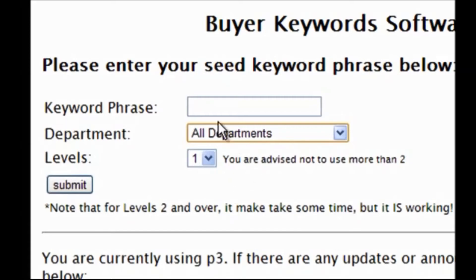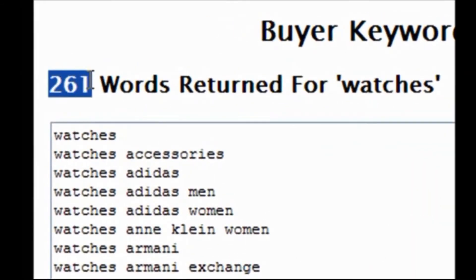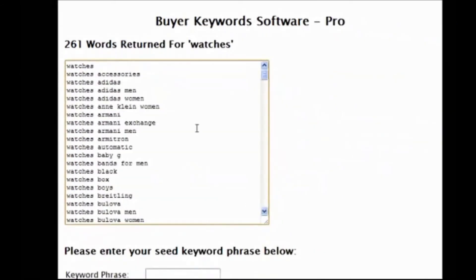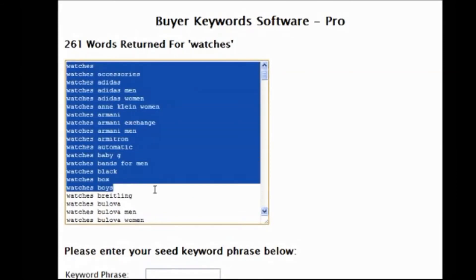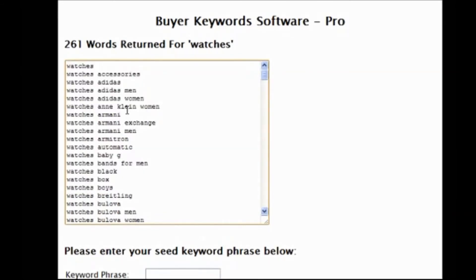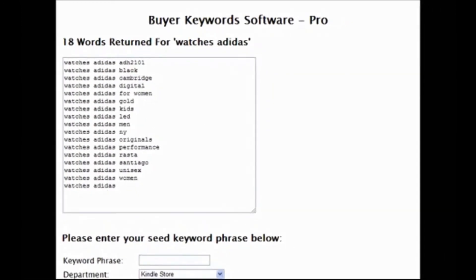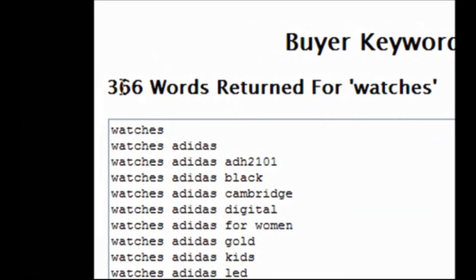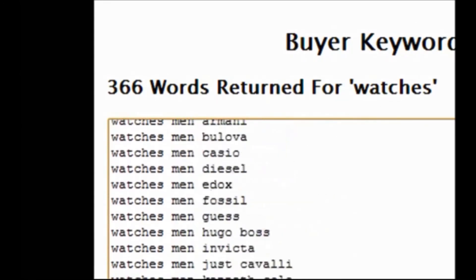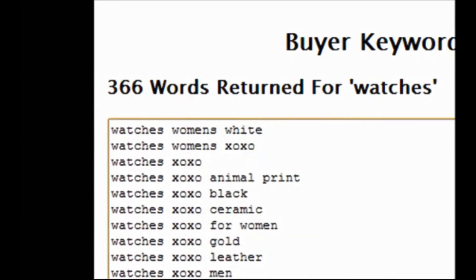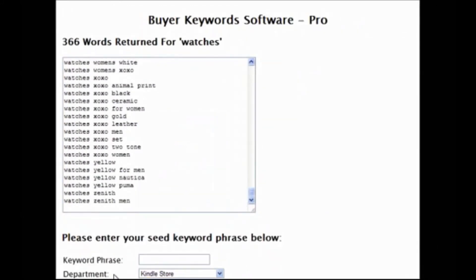For example, if I choose 'watches' in all departments at one level, that gives us 261 keywords. However, if I choose two levels deep, it takes each of those keywords and goes through them by adding a letter of the alphabet — for example, 'watches Adidas' — and does this automatically. Going two levels deep for 'watches' gives you a total of 366 buying keywords returned. You can use any keyword or phrase, and with the pro version choose any department.